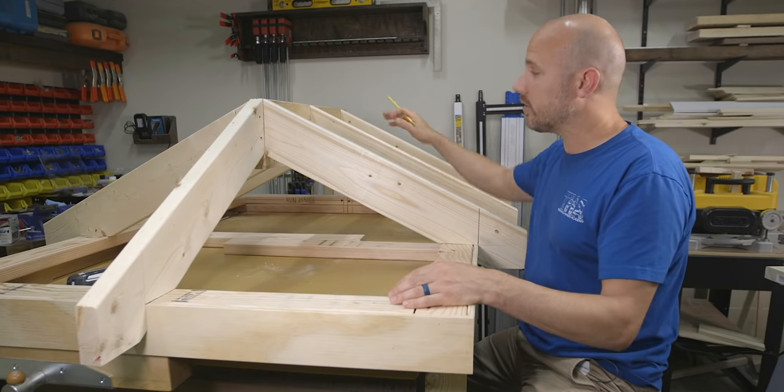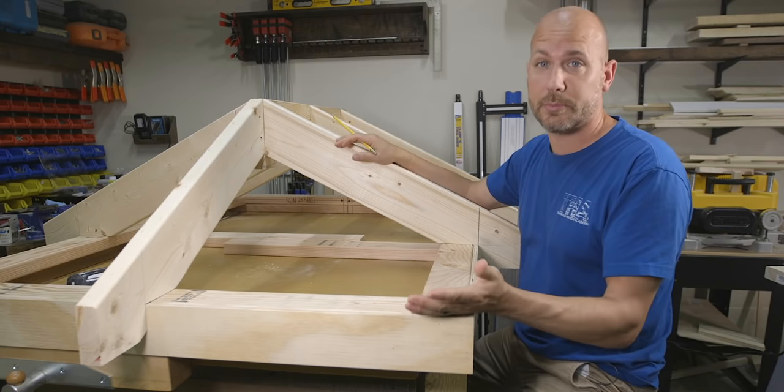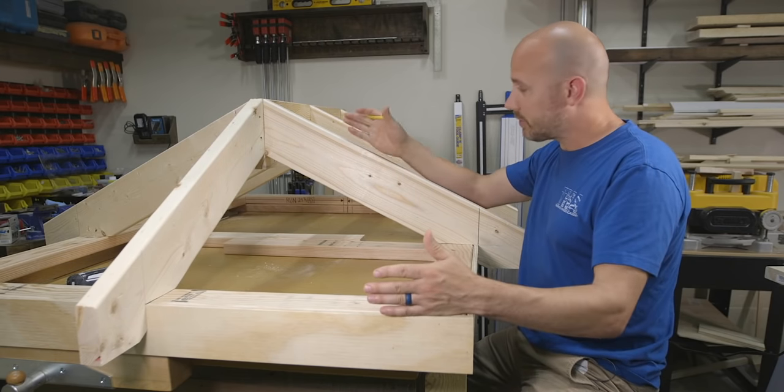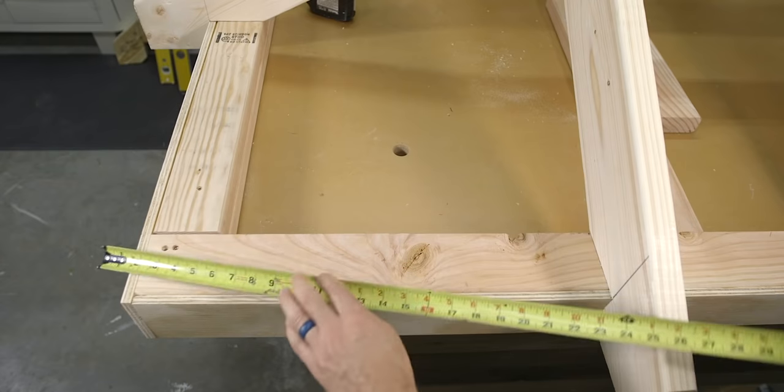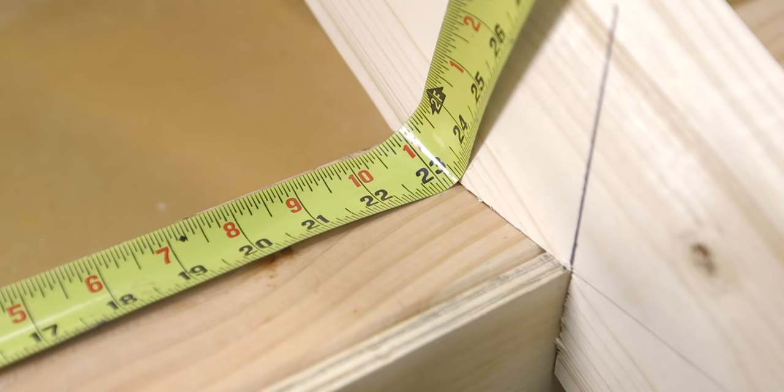And you may be wondering, how do you know where the common roof ends and the hip roof starts? Well, it's actually pretty simple. The hip roof starts 23 and a quarter inches back from the edge of the building, which is exactly our run.